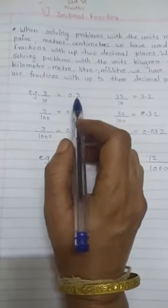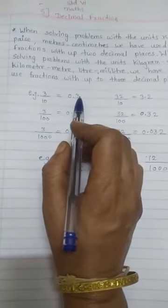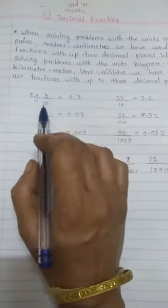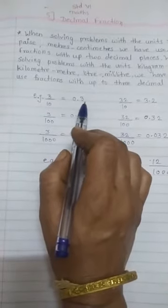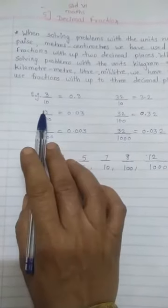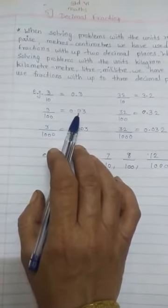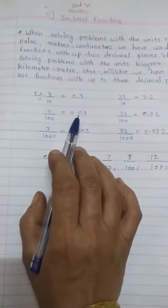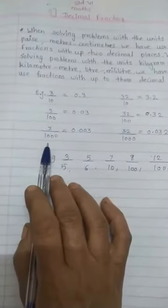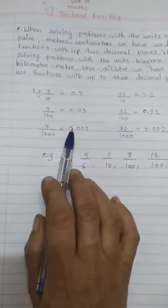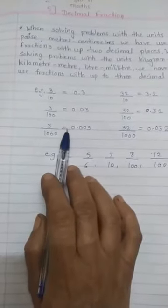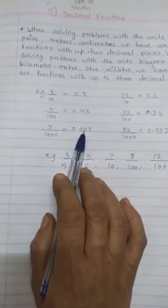After decimal point have only one digit. 3 by 10 is 0.3. 3 by 100 is 0.03. 3 by 1000, we have after decimal point 3 digits, is 0.003.